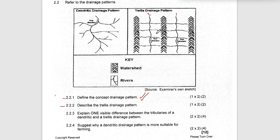The second characteristic is that the tributaries of the trellis pattern are joining at a right angle — at 90 degrees — to the mainstream. So the tributaries are perpendicular to the mainstream. So to summarize: number one, the mainstreams are parallel; and number two, the tributaries of a trellis drainage pattern join at a 90-degree right angle.